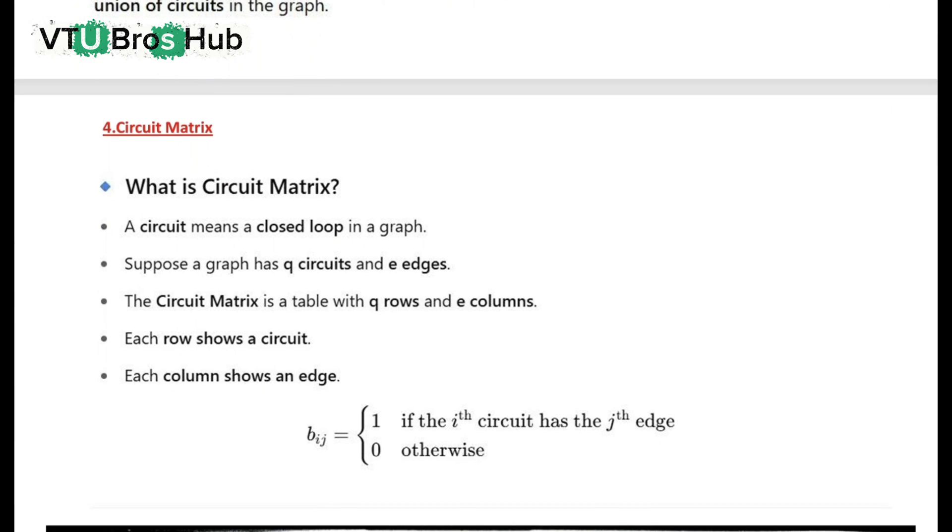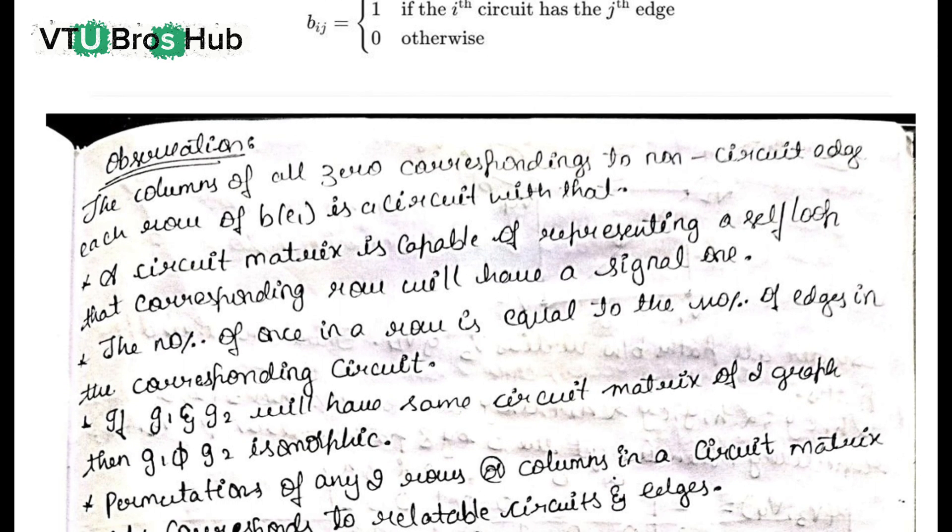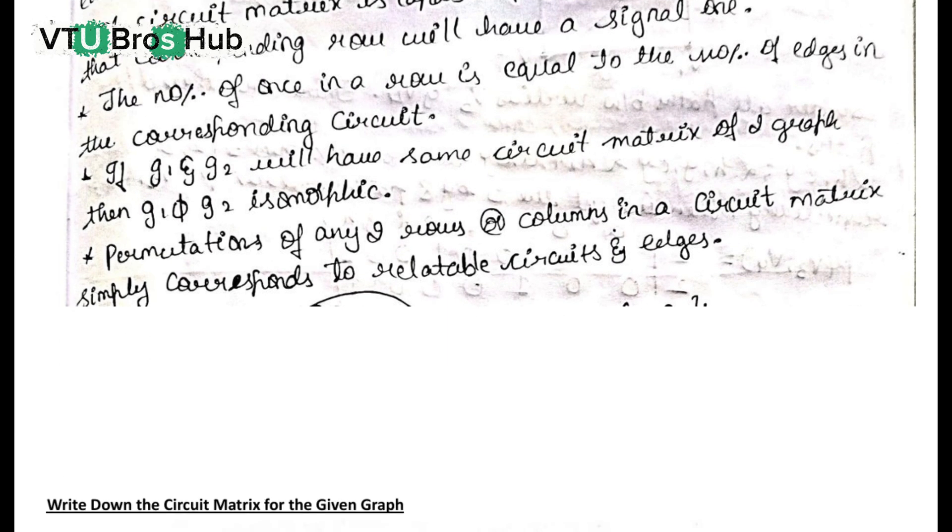Circuit matrix: A circuit matrix lists cycles in the graph. Each row is a cycle, each column is an edge. Refer to the circuit matrix shown on screen.